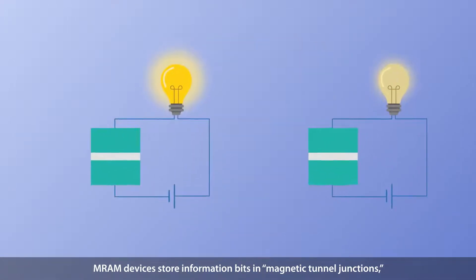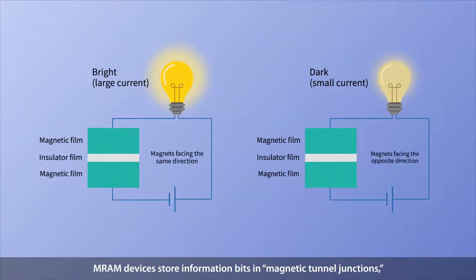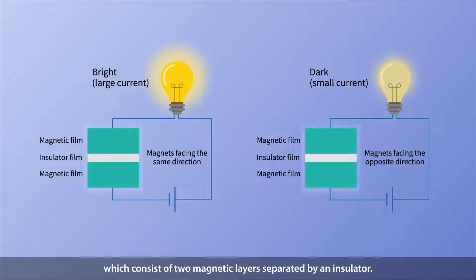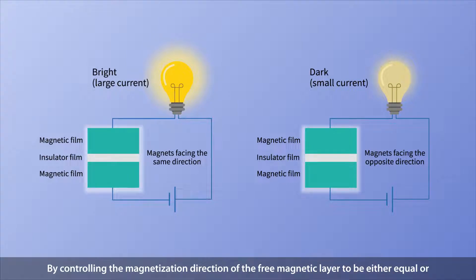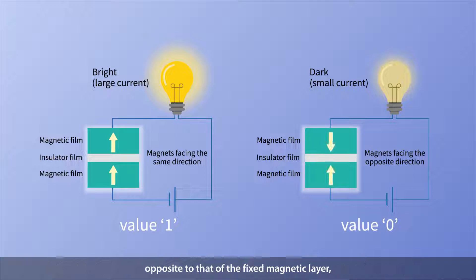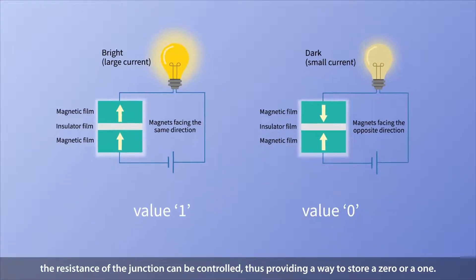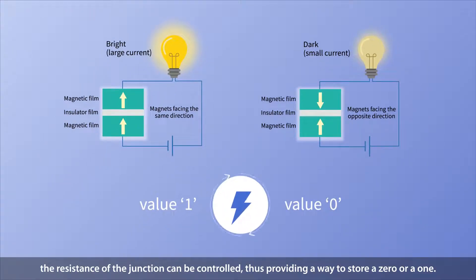MRAM devices store information bits in magnetic tunnel junctions, which consist of two magnetic layers separated by an insulator. By controlling the magnetization direction of the free magnetic layer to be either equal or opposite to that of the fixed magnetic layer, the resistance of the junction can be controlled, thus providing a way to store a 0 or a 1.